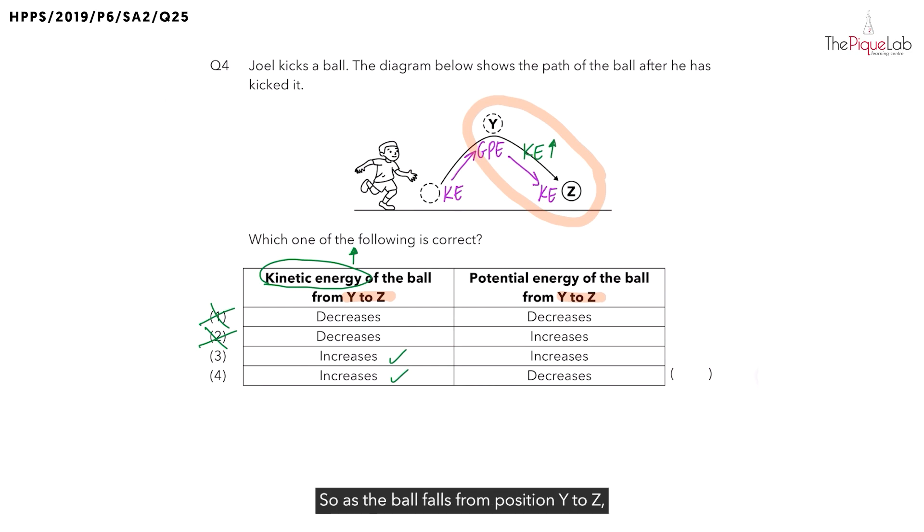So as the ball falls from position Y to Z, you will notice that the ball will move faster and faster towards the ground. Let's take a look at the next column. What happens to the potential energy of the ball as it moves from position Y to Z?